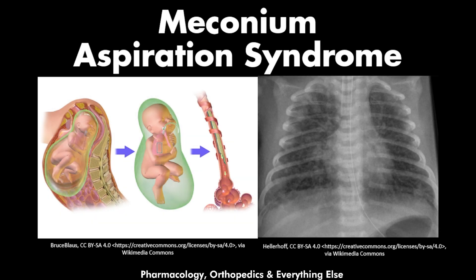Hello and welcome back to a new video. Here we will talk about the meconium aspiration syndrome. Meconium aspiration occurs when the baby passes meconium while inside the uterus, and then during labor, the baby would aspirate this meconium, leading to respiratory distress that we call the meconium aspiration syndrome.